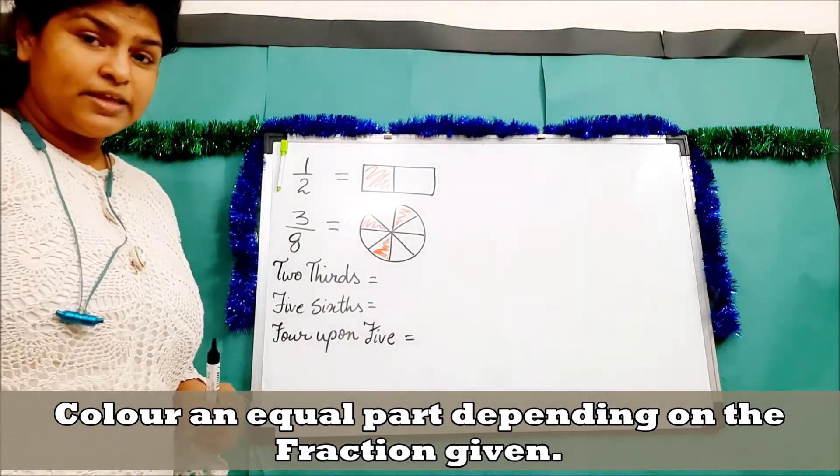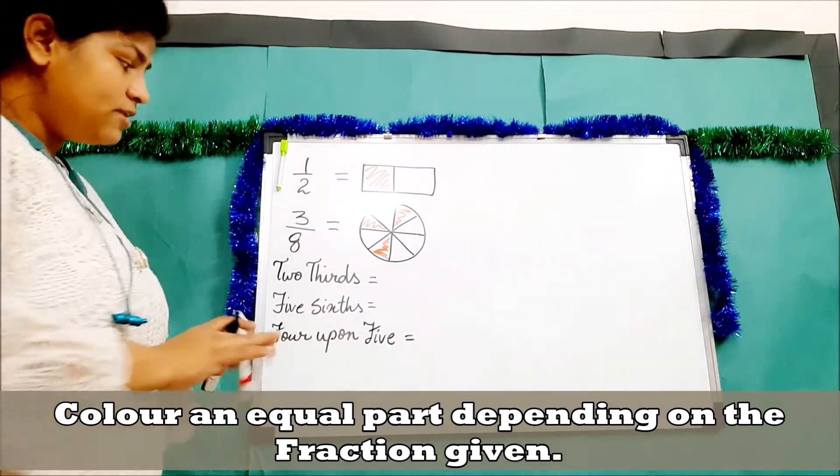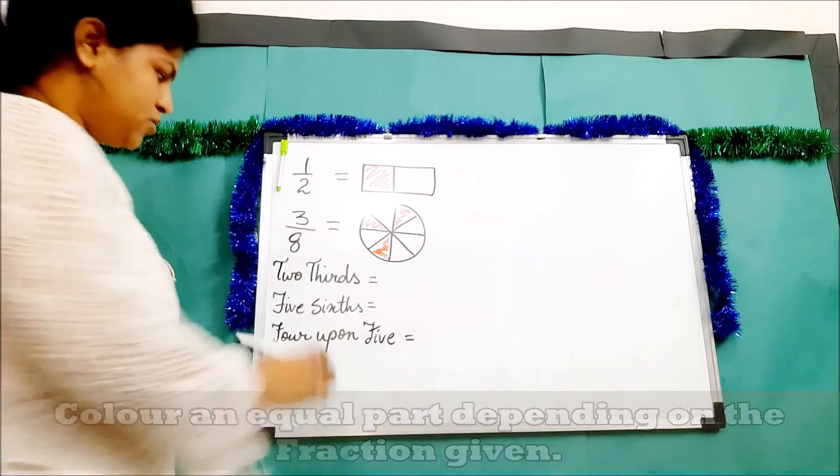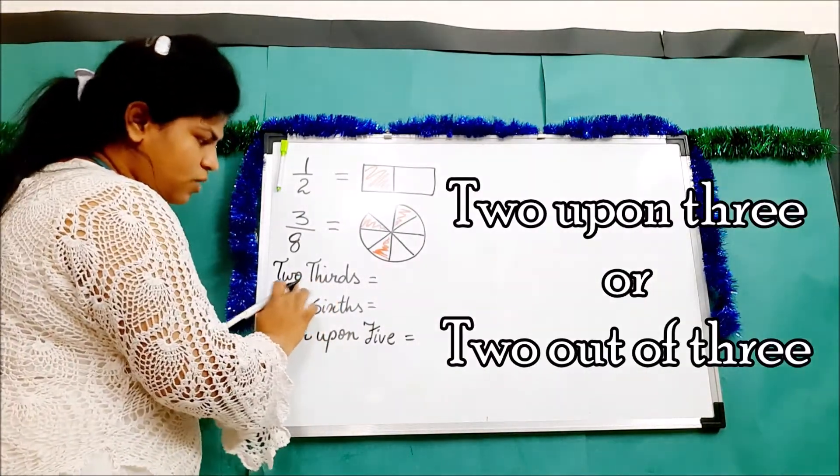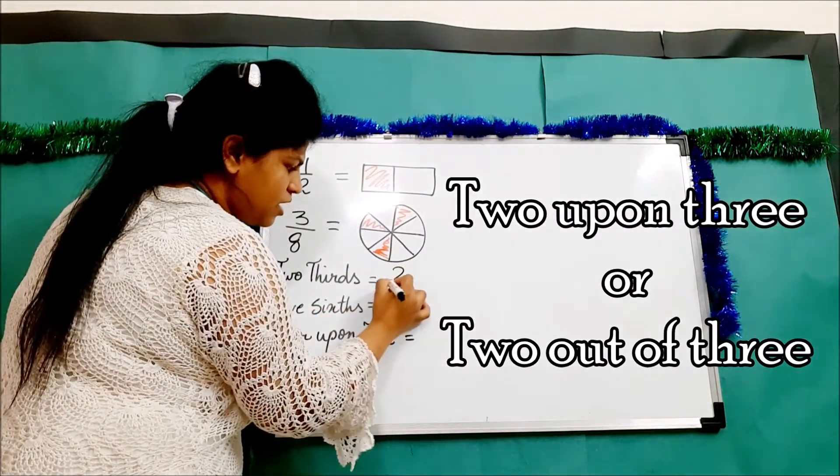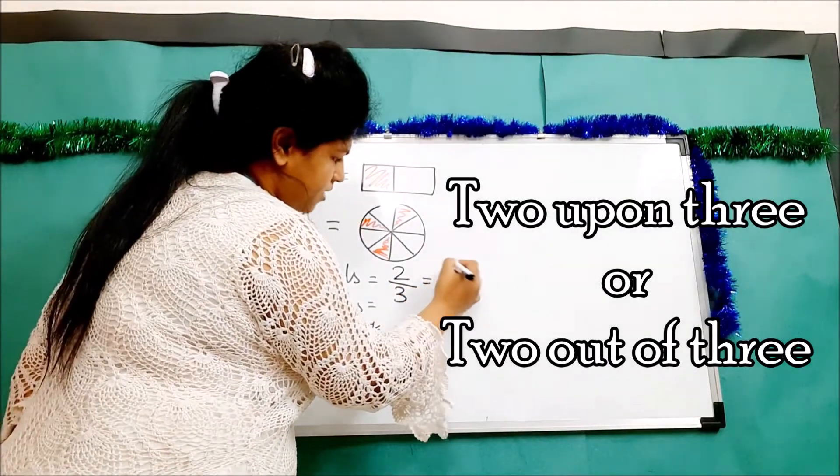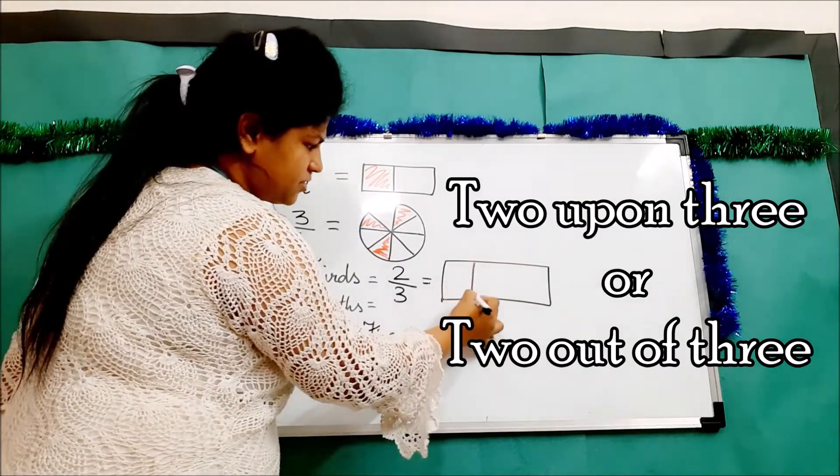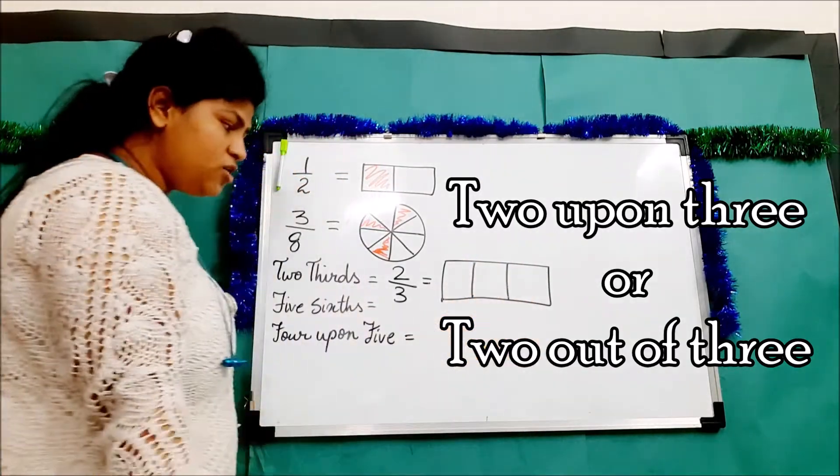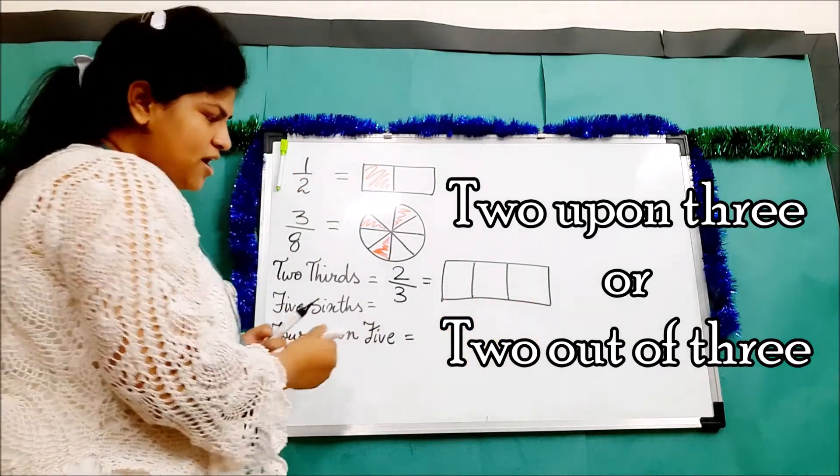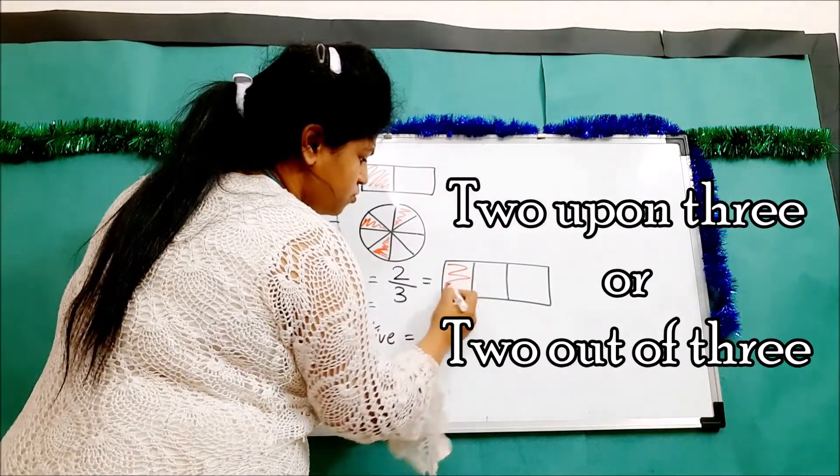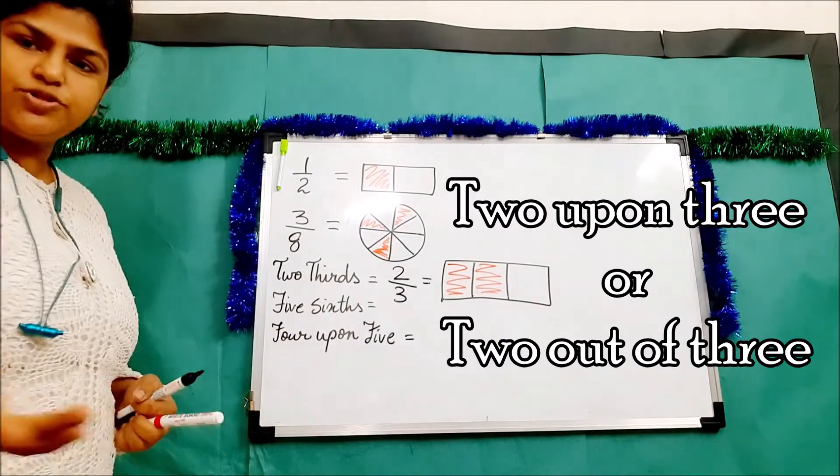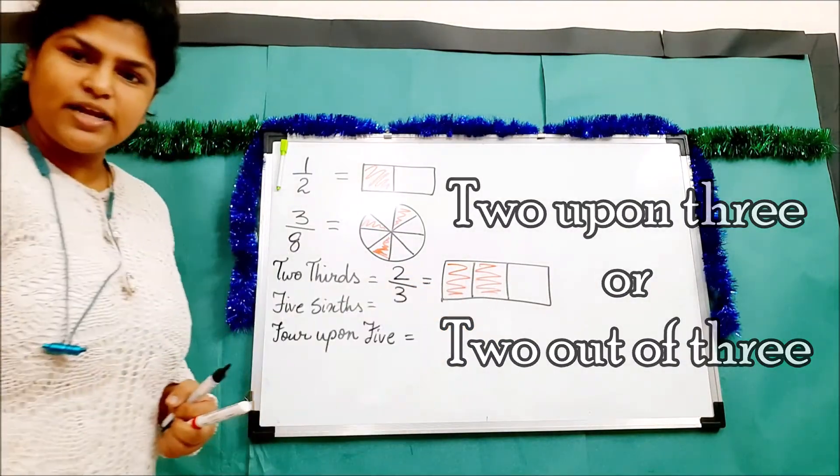Let's go to the next one - two thirds, which means when you have something like that, you will write it as a fraction. Two thirds means two out of three. So I will make a rectangle and divide it into three equal parts, and I color two.